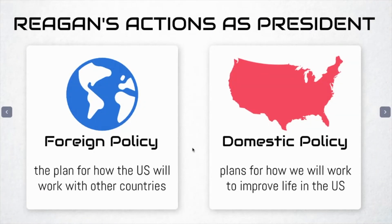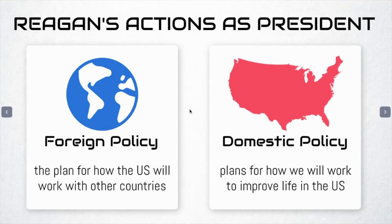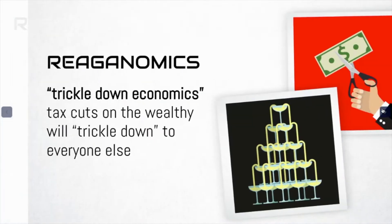Today we're going to learn about Reagan's foreign and domestic policies. When we're talking about a president's foreign policy, we're talking about their plan for how the United States is going to work with or against other countries. Domestic policy is all about how that president wants to work to improve or change people's lives right here in the United States. So if a president is talking about dealing with another country threatening to go to war, that is foreign policy. If the president is talking about making colleges more affordable, that is domestic.